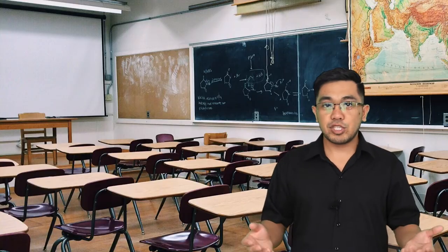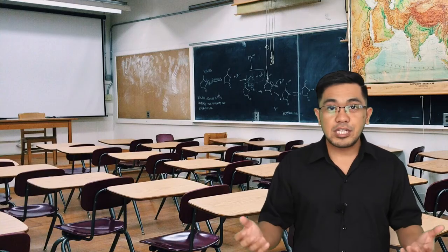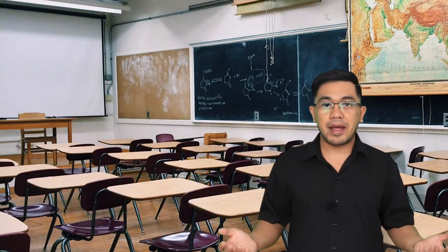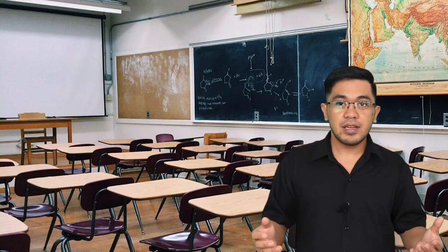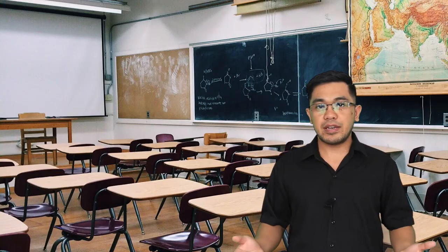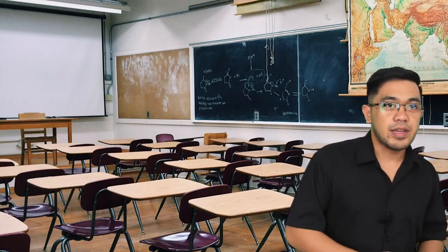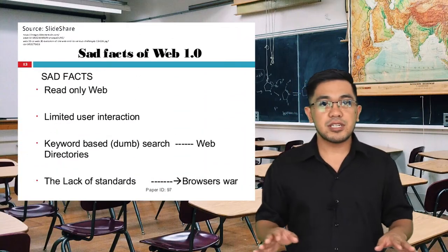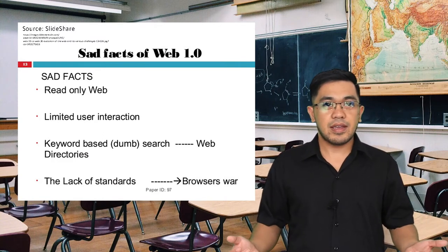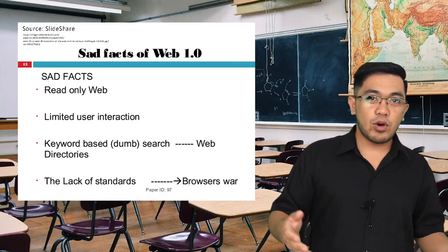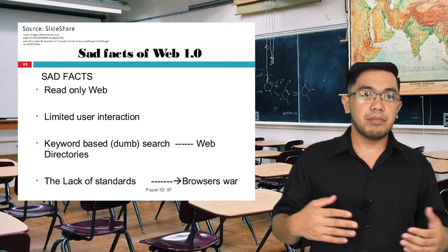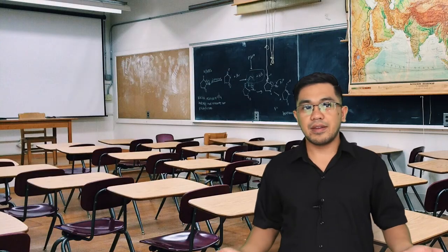Making comments, reactions, or writing opinions about a post — just like what we have today — did not exist yet. Features like liking, as seen on YouTube, Facebook, or Instagram, were not a feature during web 1.0. The interaction between websites and users was very limited.